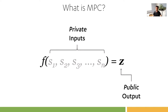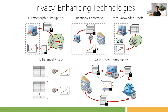It's a really powerful technology, but at the same time, unlike, for example, differential privacy, which also exists in the same space of privacy-enhancing technologies, it does not guarantee row-level anonymity. There are other tools and technologies that I would consider to be complementary to MPC in the space of privacy-enhancing technologies.